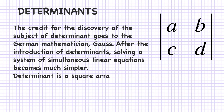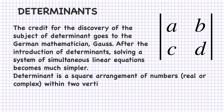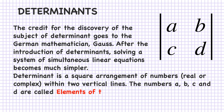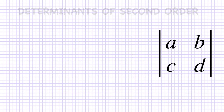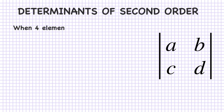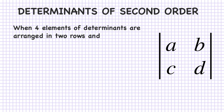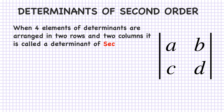A determinant is a square arrangement of numbers, real or complex, within two vertical lines. The numbers A, B, C, and D are called elements of the determinant, and the number of rows and columns is called the order of the determinant. When four elements are arranged in two rows and two columns, it is called a determinant of second order.